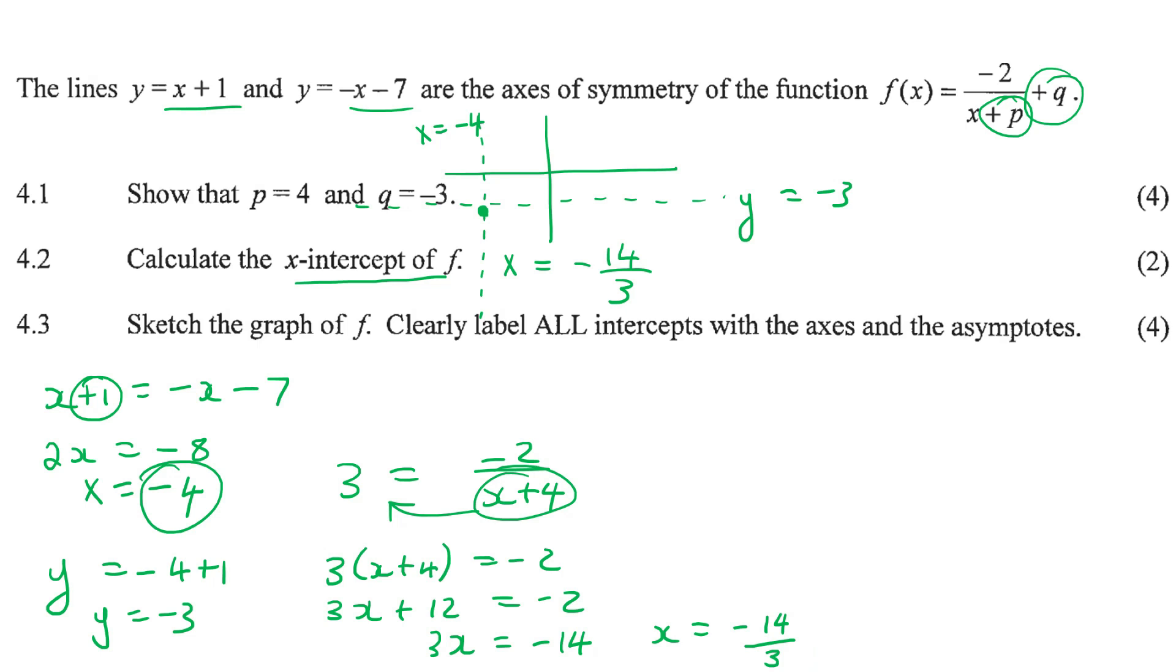14 over 3 is 4.66. So it's negative 4.66. So if this is negative 4, then it's on this side of the asymptote. So it's probably there. Let's get rid of that. And then we still need a y-intercept now.